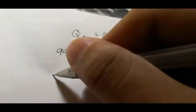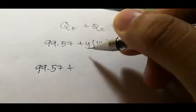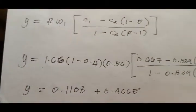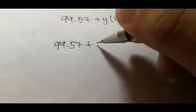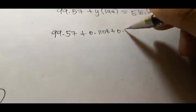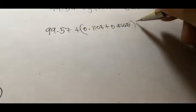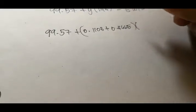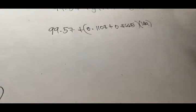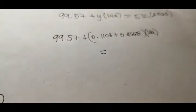So we plug in the values. Y is 0.1108 plus 0.466E multiplied by 144. This will be equal to,